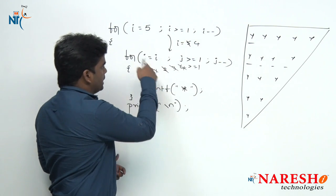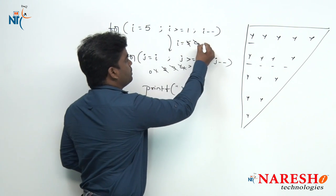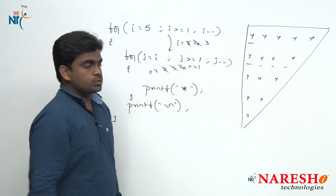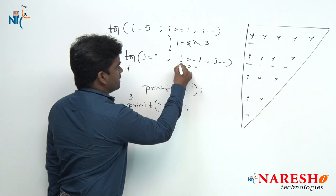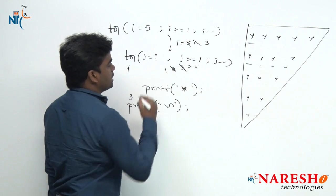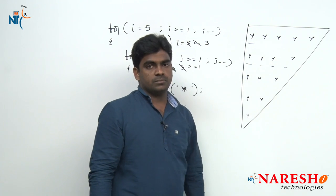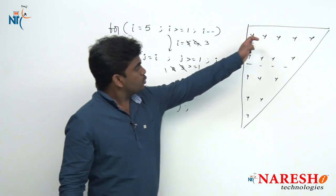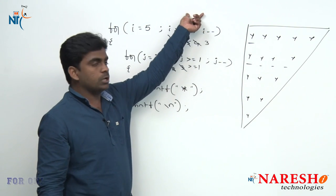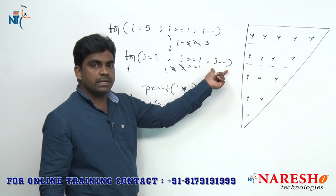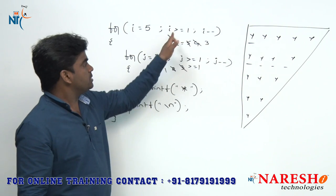Whenever J becomes 0 the inner loop terminates. Outer loop executes again — I becomes 3. In the third row, J starts with 3, then becomes 2, then 1 — 3 iterations, so 3 stars print in the third row. And like that, using the decrement operator in the outer loop and decrement operator in the inner loop, these are the initialization values and conditions.